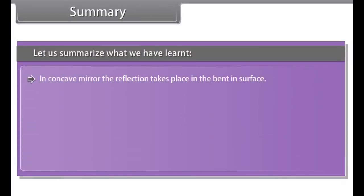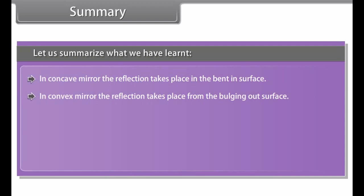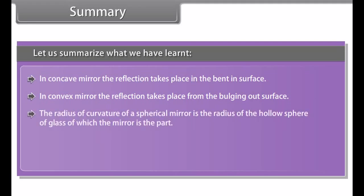Did you know? Light exerts physical pressure on objects in its path. Light pressure equals the power of the light beam divided by c, the speed of light. It is written in the Rig Veda that light consists of three primary colors, and mixing these three colors produces all the objects of sight.